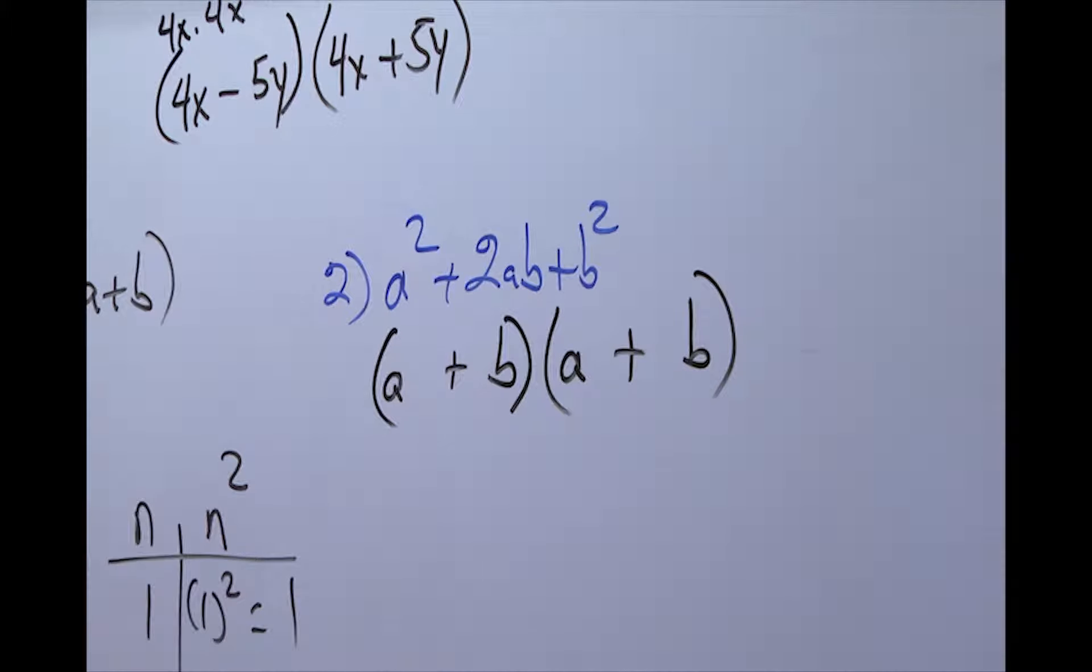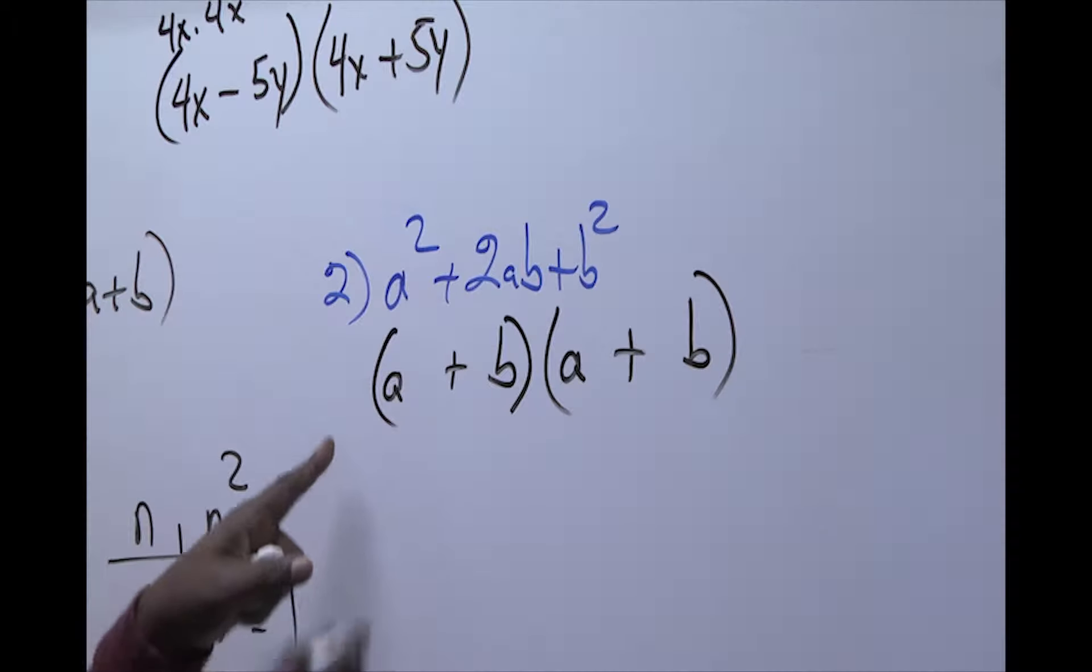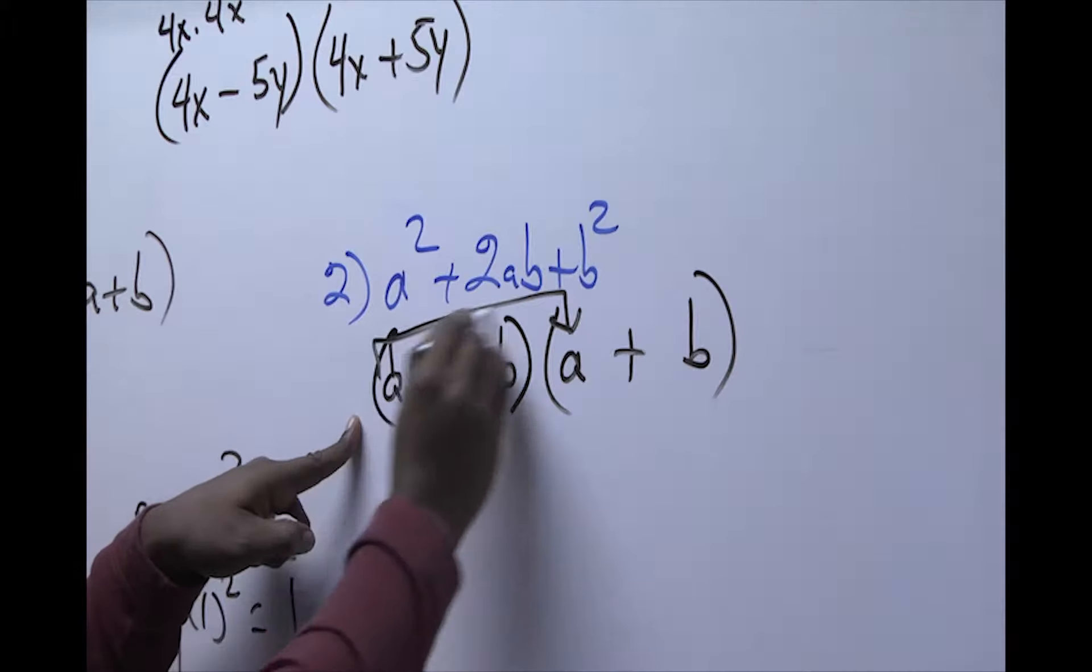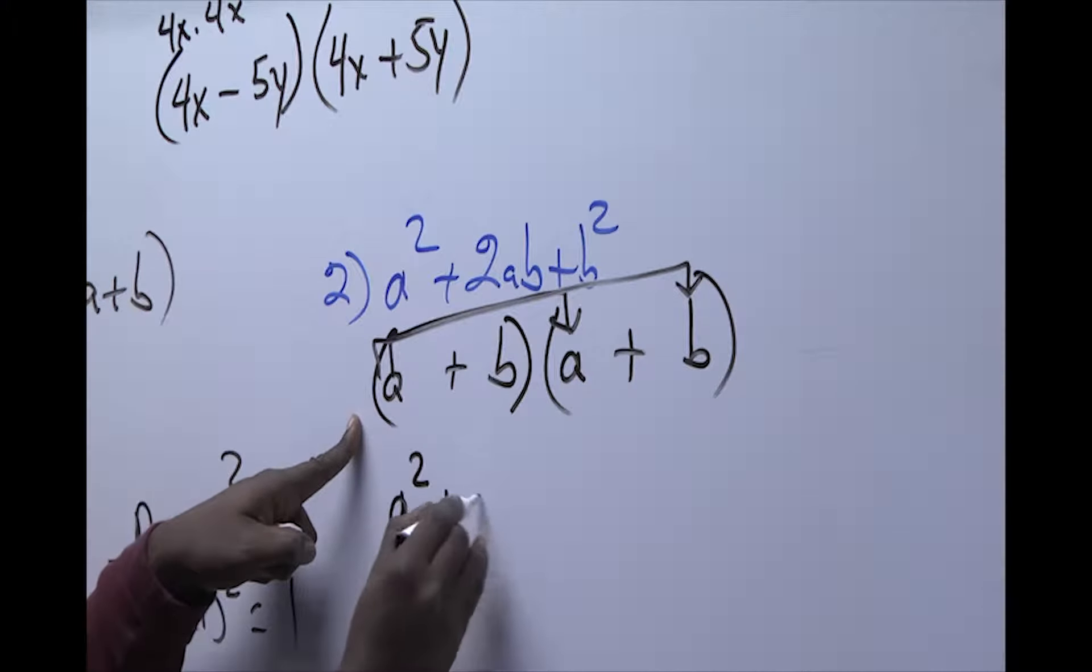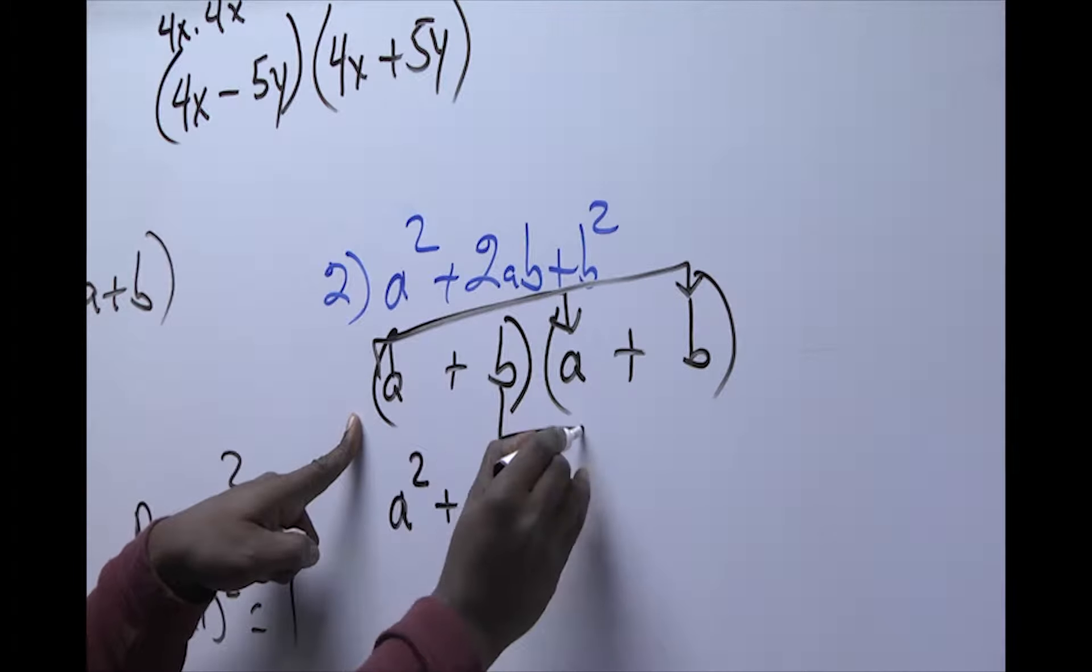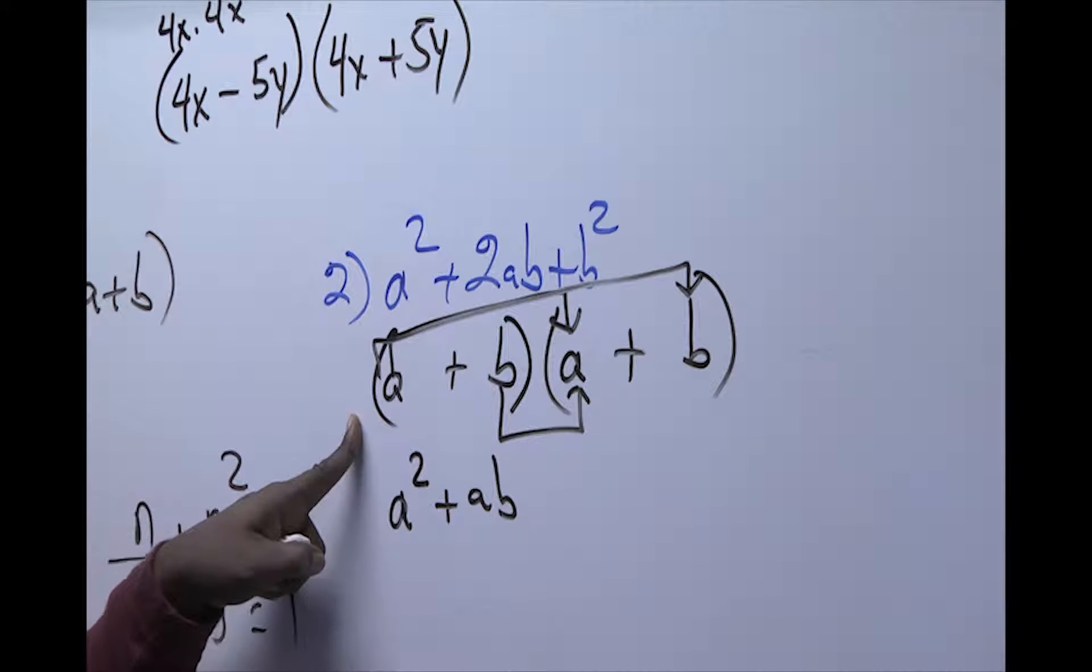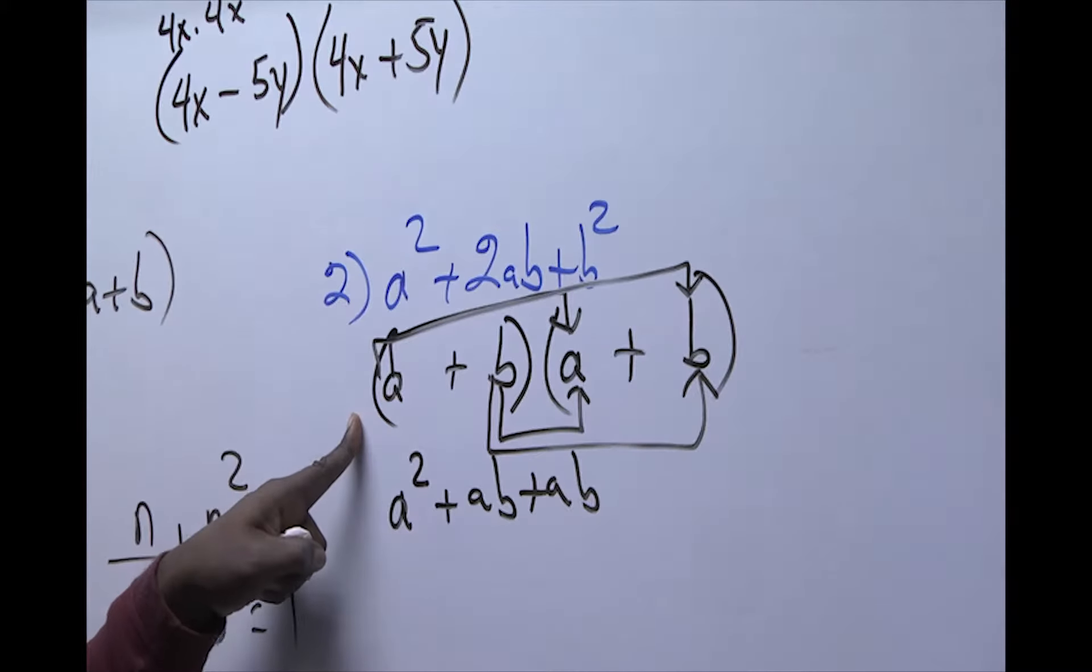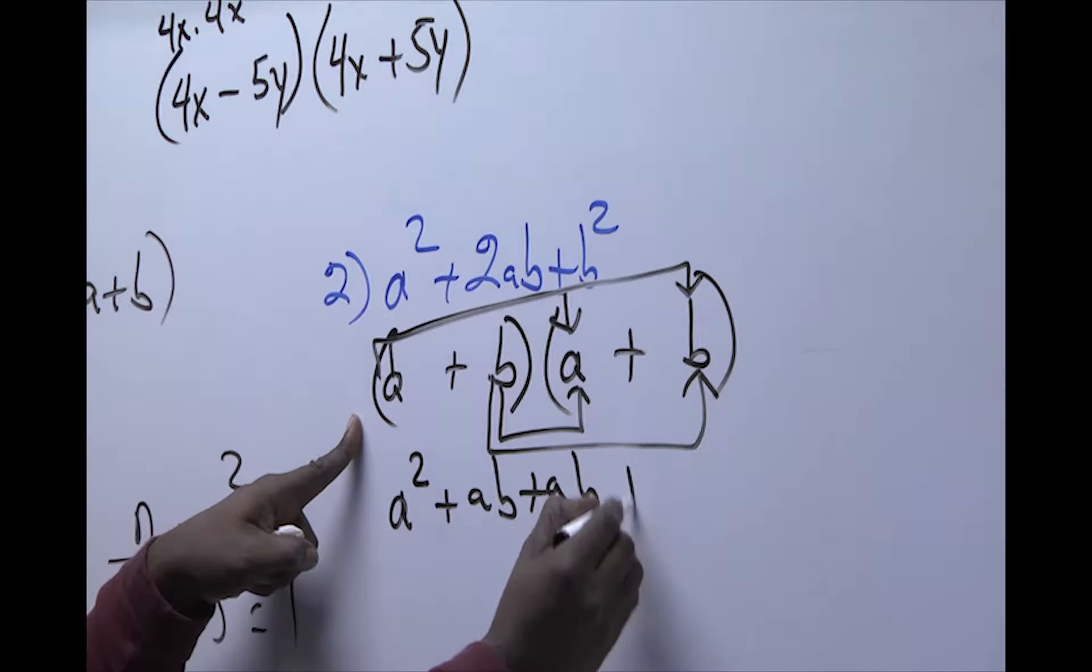And you can multiply using the FOIL method again to check it out. The a times a would give us a². A times b would give us ab. And if you go inner, this is b times a would be ab. And then we have your outer, which would make it b².